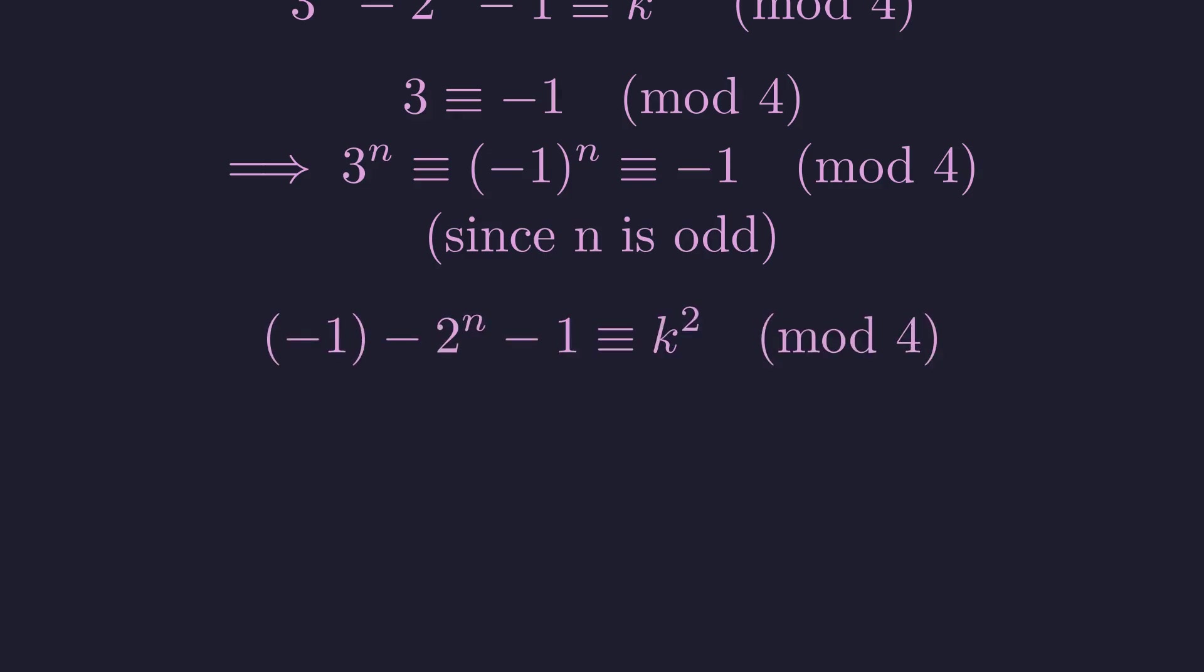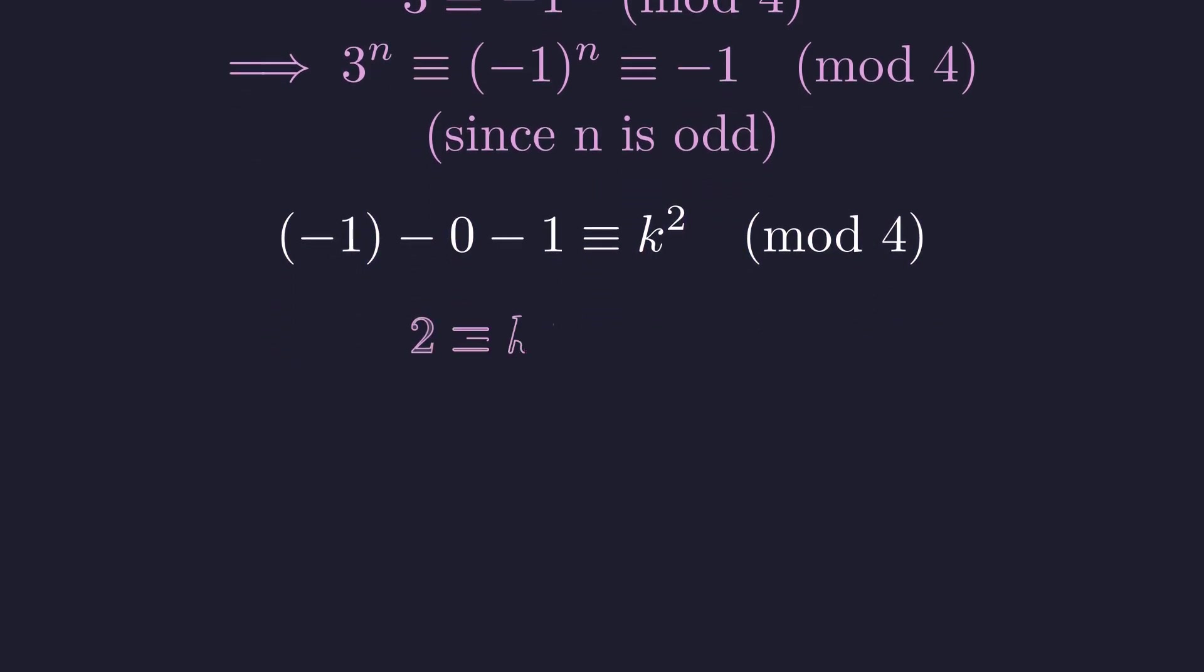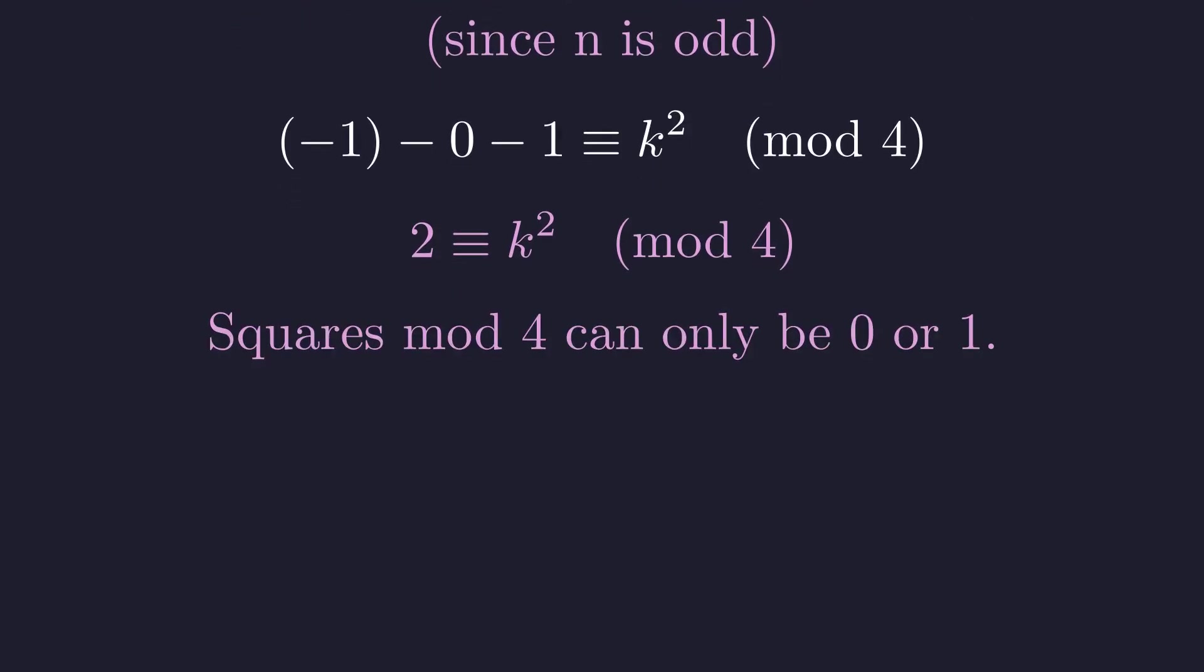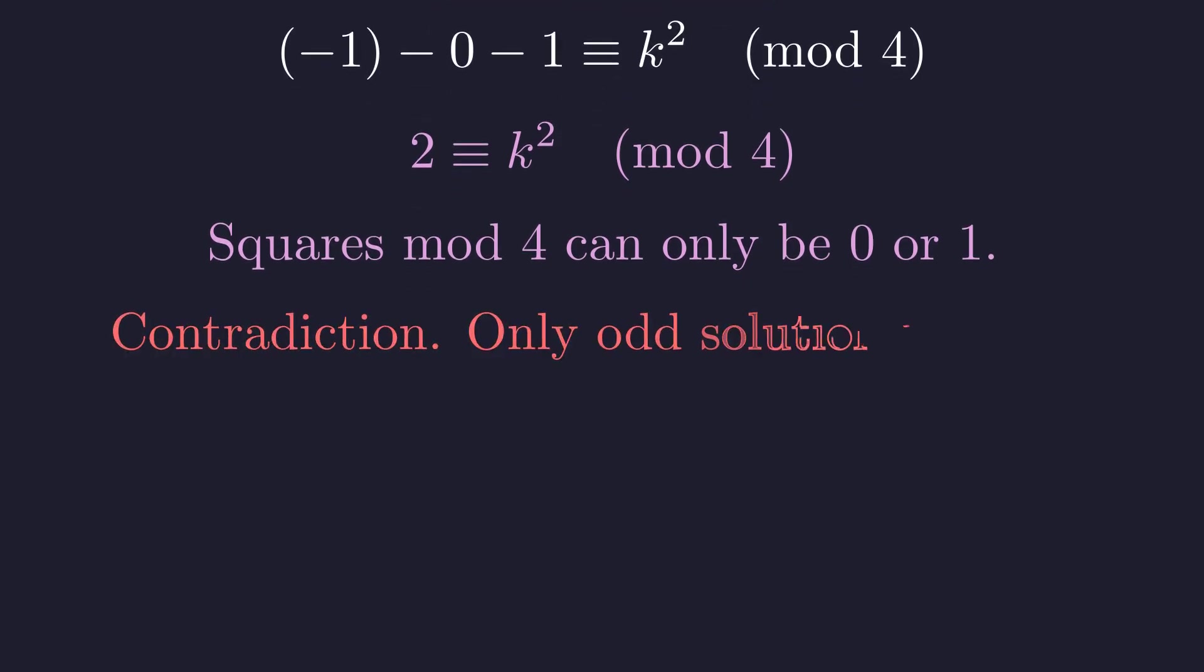Now, for the 2 to the n term. When n is at least 3, 2 to the n is divisible by 8, which means it's equivalent to 0 modulo 4. So our equation becomes much simpler. We end up with k squared being equivalent to 2 modulo 4. But here's the problem. Any perfect square, when divided by 4, can only leave a remainder of 0 or 1, never 2. And that's our contradiction. So n equals 1 is the only odd solution we'll ever find.